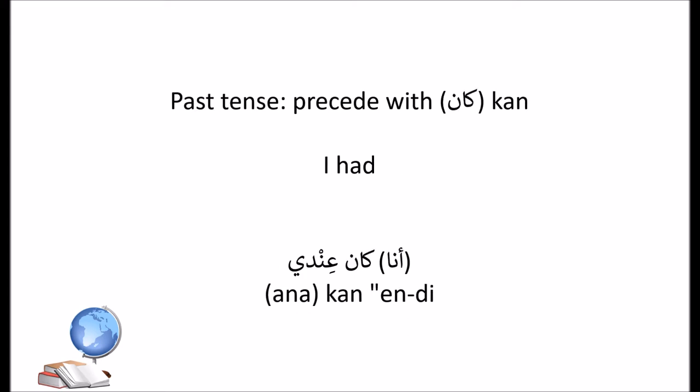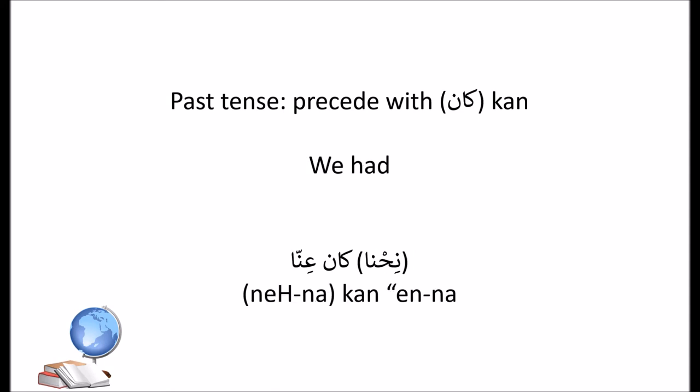To make it in the past tense, we precede عند with كان. I had — أنا كان عندي. We had — كان عنا.